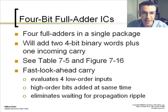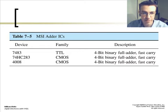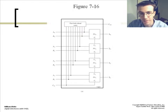The Fast Look Ahead Carry. This type of carry evaluates 4 low order inputs. High order bits added at the same time. This eliminates waiting for propagation ripple. This type of adder is shown here by 4 different types of devices. The 74-83, 74-283, and the 4008 TTL or CMOS device. It's a 4-bit binary full adder with a fast carry. And this is an example of the Fast Look Ahead Carry that takes the carry and C out value, determining whether or not there's going to be a carry, judging by what the inputs are.